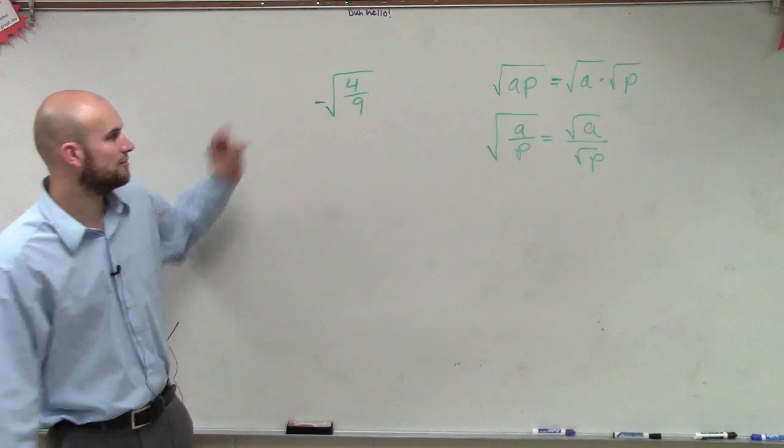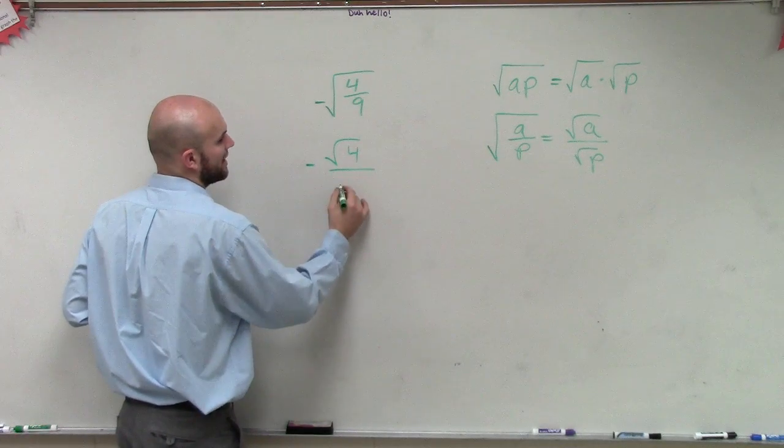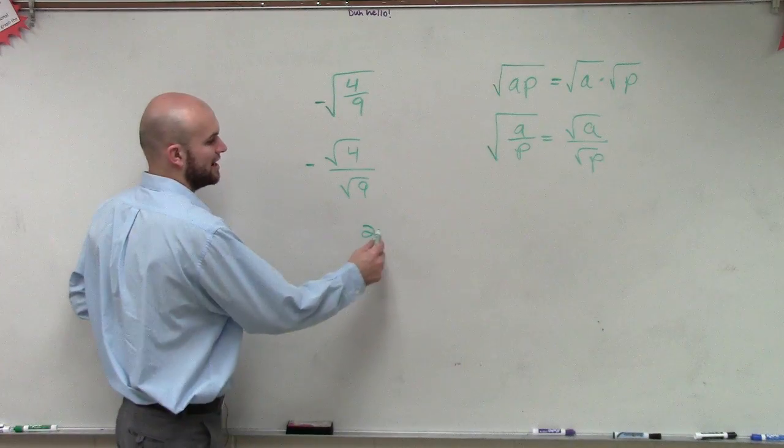Alright? So you look at this problem and say, alright, well what that means is negative square root of four divided by the square root of nine. So do I know the square root of four? Two. Square root of nine? Three.